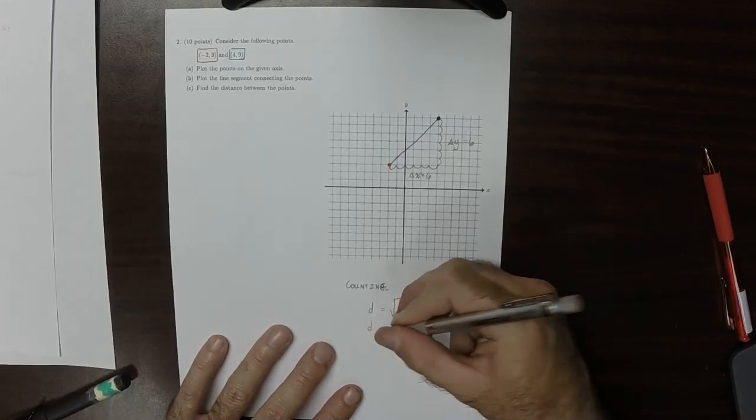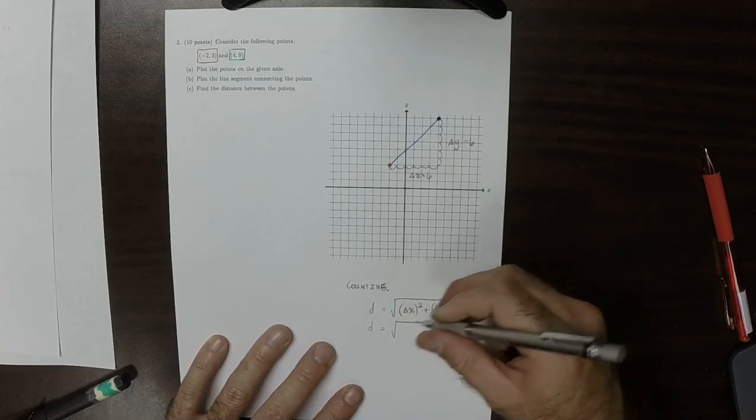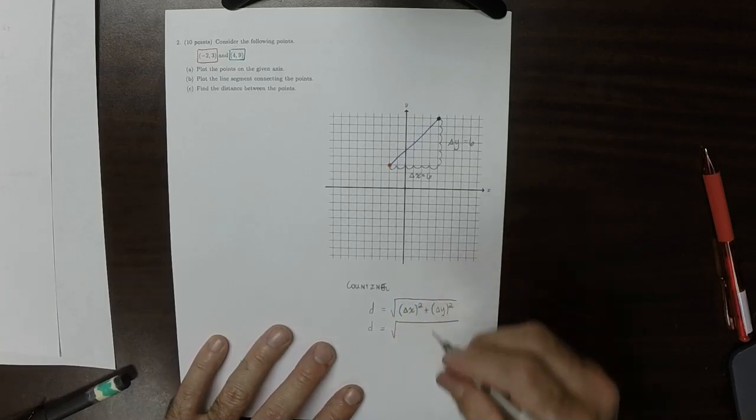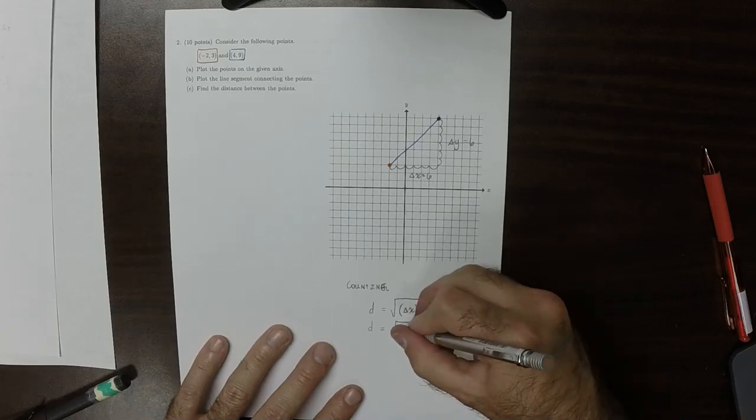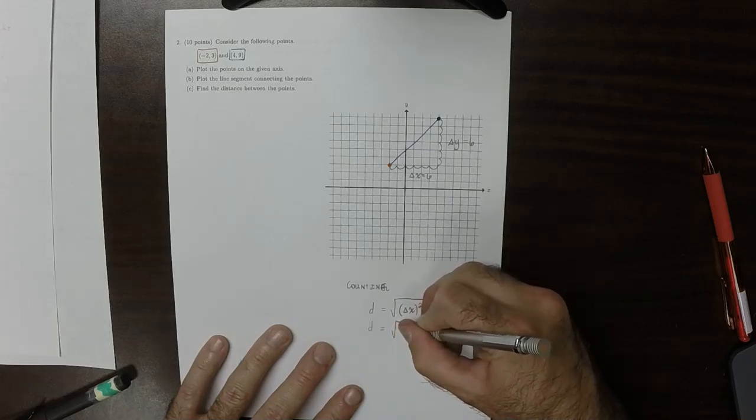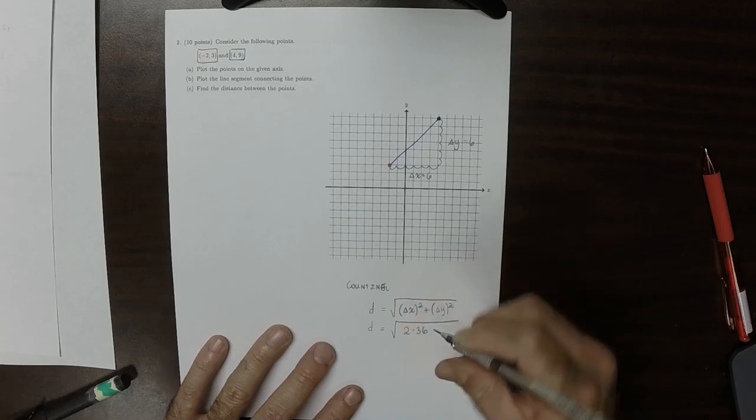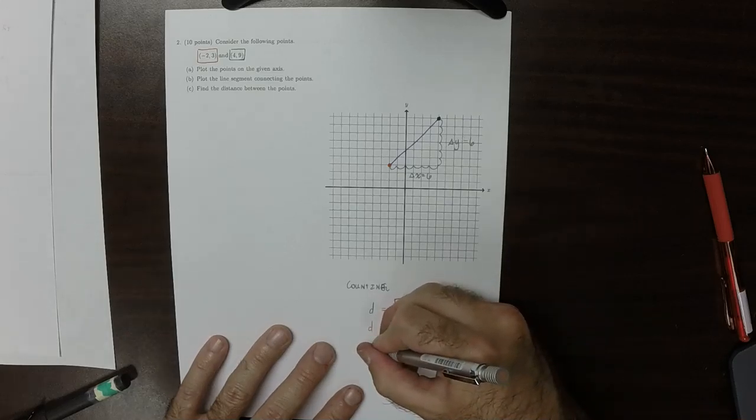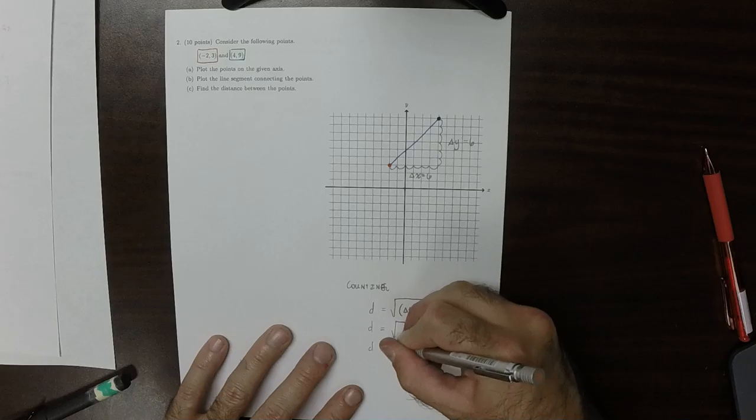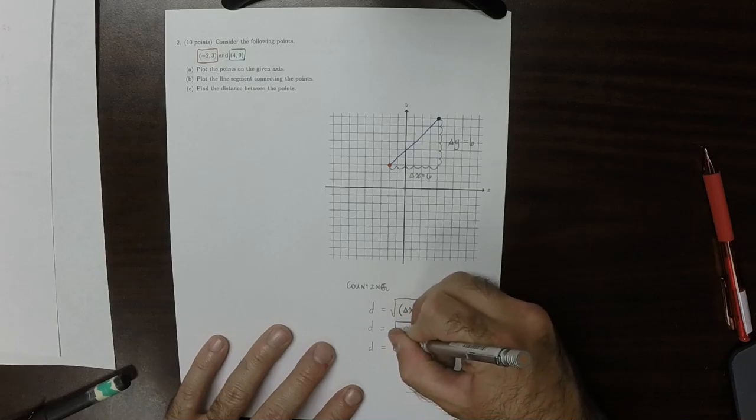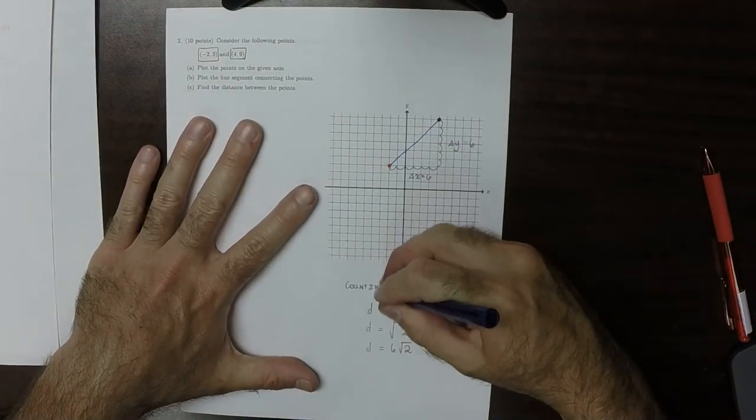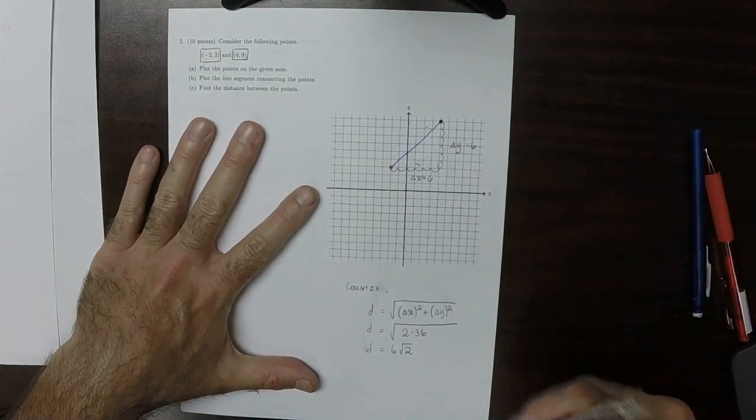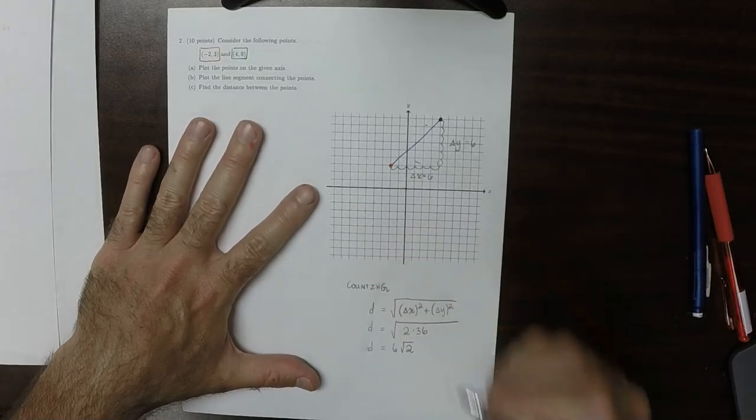So the distance should be the square root of, well, they're both 6. So this is 36 and another 36. So this is 2 multiplied by 36. That 36 can come out of the radical as 6. So this would be 6 square root 2.